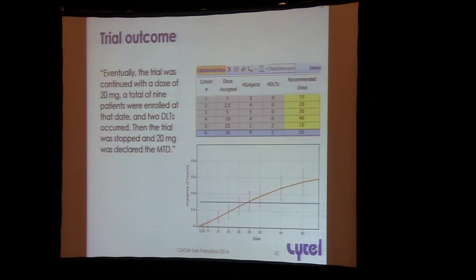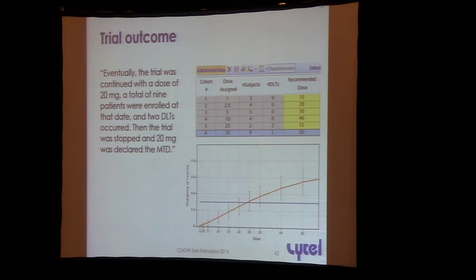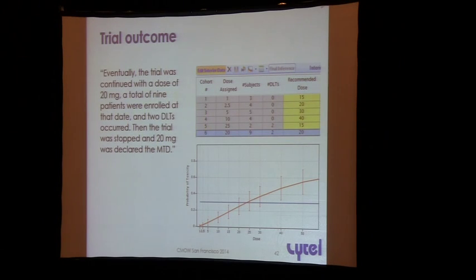This information plus all the other clinical trial data — grade 2 toxicities, whether toxicities are easily manageable, questionable evaluability of subjects — informs the decision to escalate. What happened in this trial was that they dropped one dose and went to 20 mg, even though the algorithm was recommending dose 15 as the best decision. The team decided to go with 20 mg, studied nine patients, saw two DLTs, and based on that were able to stop the trial and declare 20 mg as their MTD.